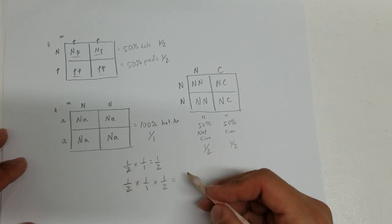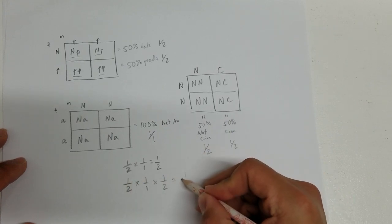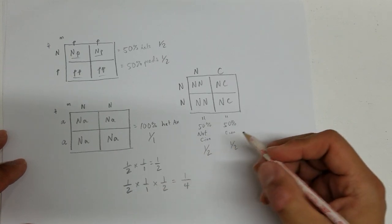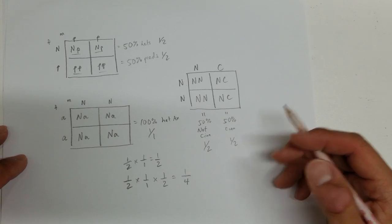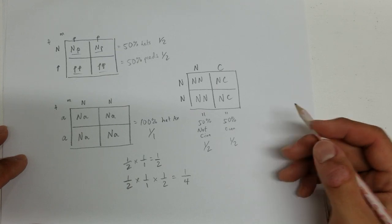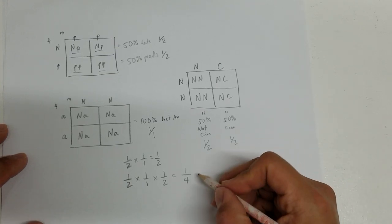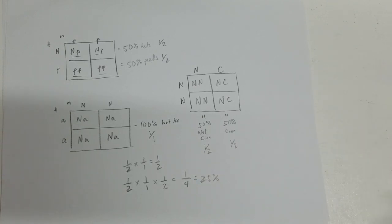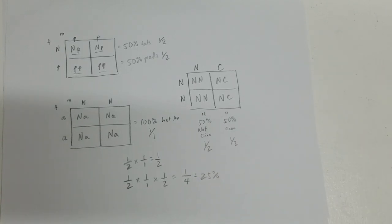And we just have to multiply all of these together. So the numerator stays as a 1. The denominator is 2 times 1 times 2, which is 4. So we have a 1 in 4 chance of hitting that pied, cinnamon pied het for xanthic. And for those of you who like percentages, we can equate this back to 25%. So that's about a quarter of the clutch will be cinnamon pied het for xanthic.